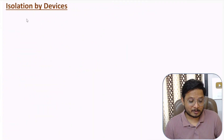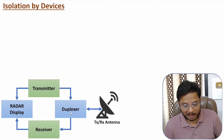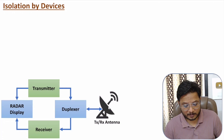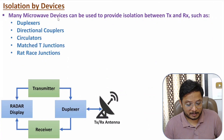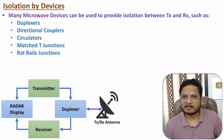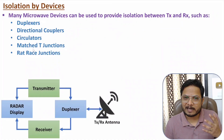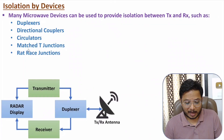Now I will explain isolation by microwave devices. There are many microwave devices that one can use for isolation. One of them is a duplexer, where the duplexer isolates the transmitter and receiver circuit, and a single antenna is used for both transmission and reception — acting like a transceiver. Other microwave devices that can be used as isolators include: directional coupler, circulator, matched T junctions, and ray trace junction. Under matched T junctions, one can have magic T, E-plane T, or H-plane T. All these devices have been explained in my microwave engineering lecture series.